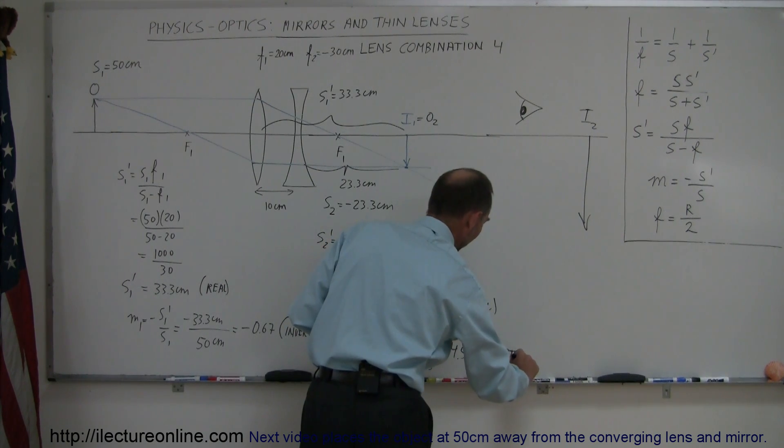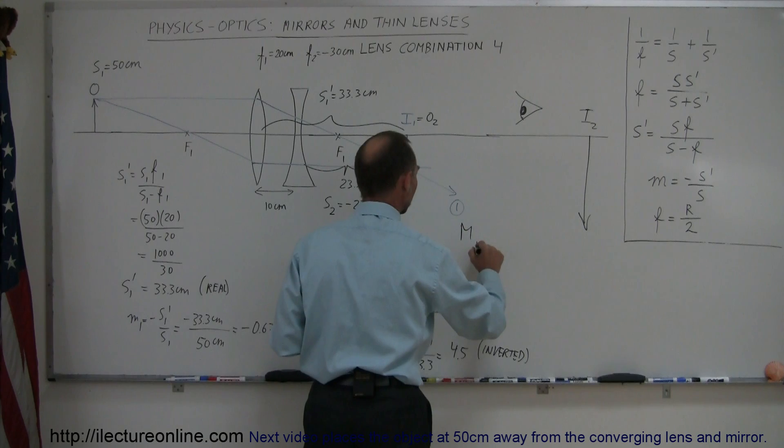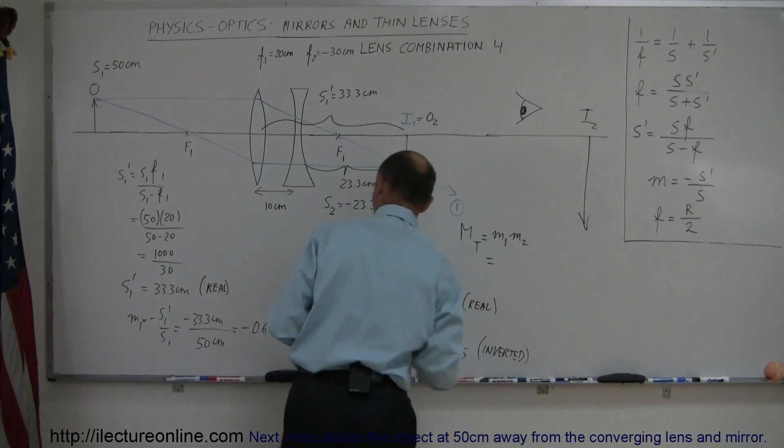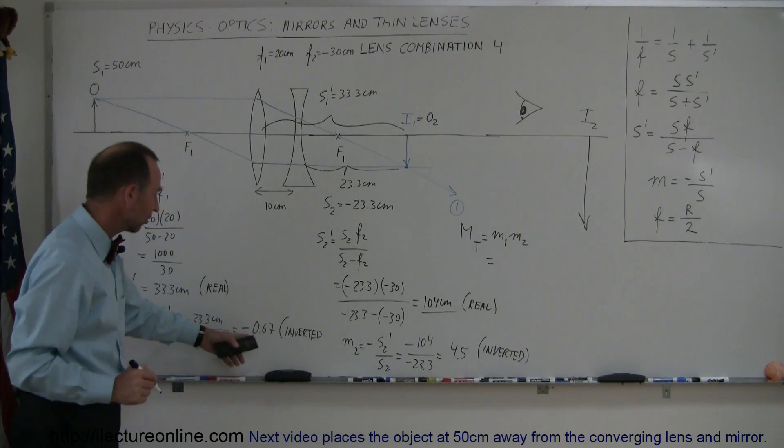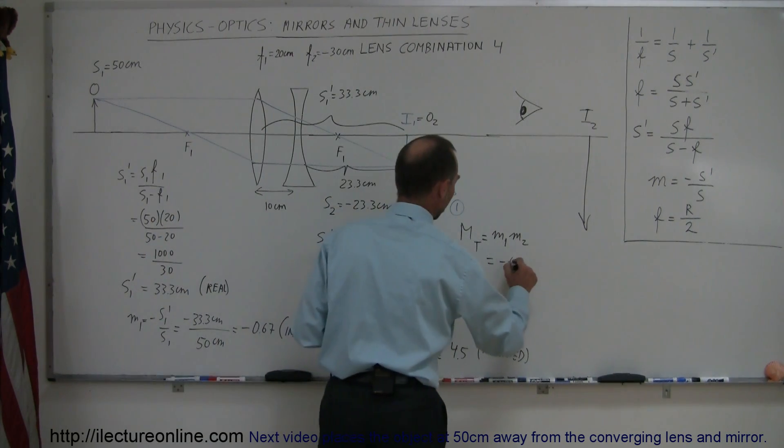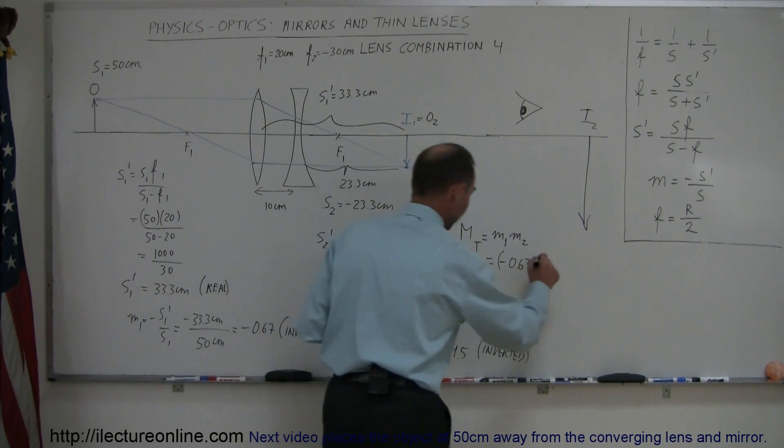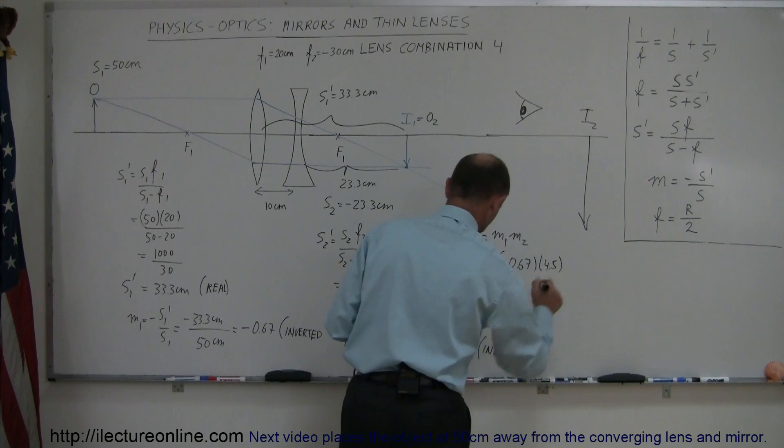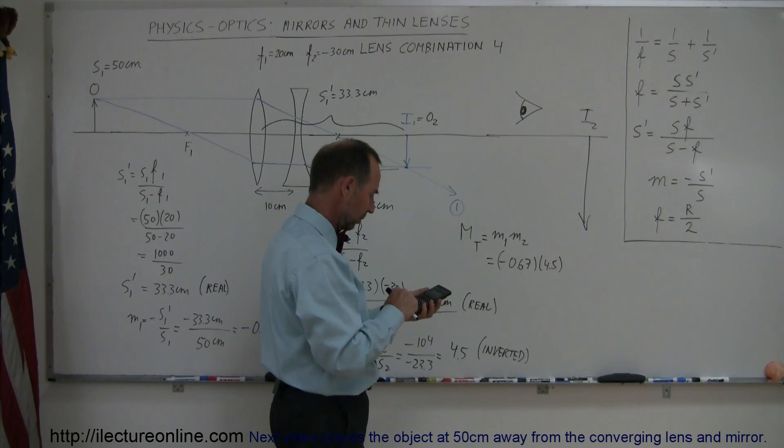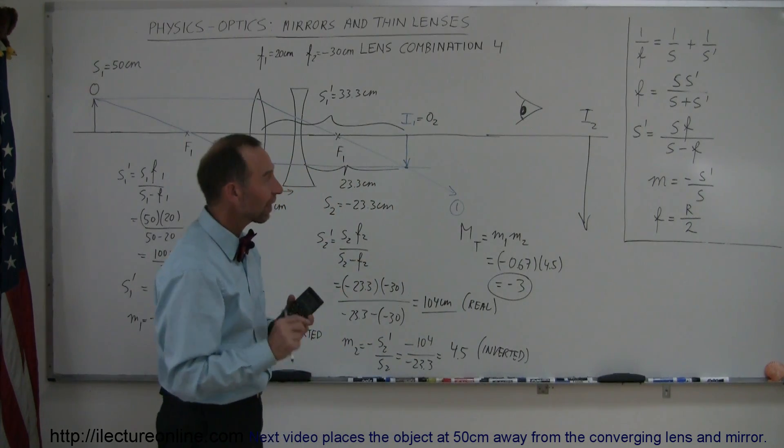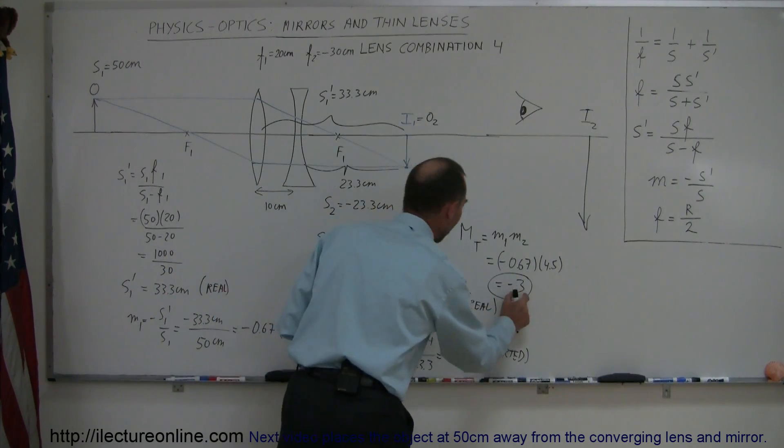We can show that by finding the total magnification, which is simply the product of M1 and M2. Since M1 was minus 0.67 and M2 was positive 4.5, that equals minus 3. So the final image was three times the size of the original object.